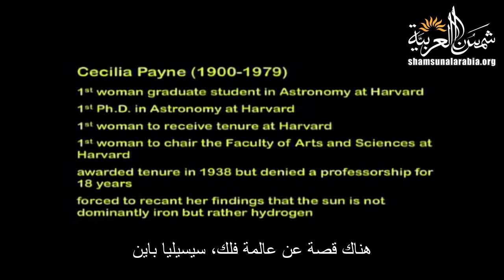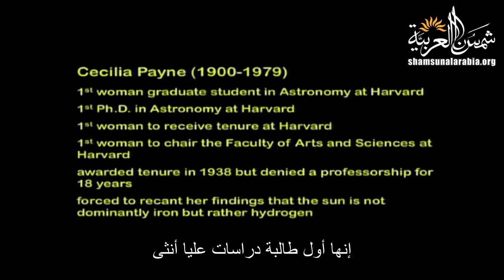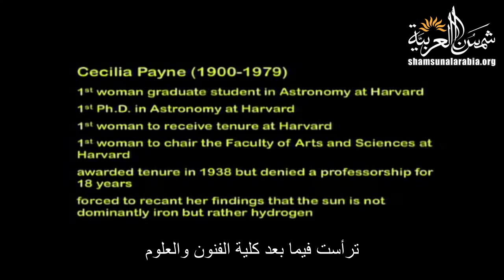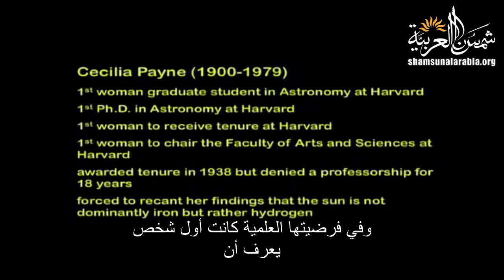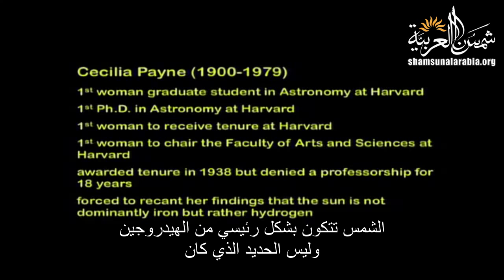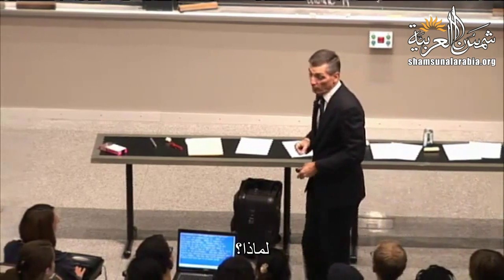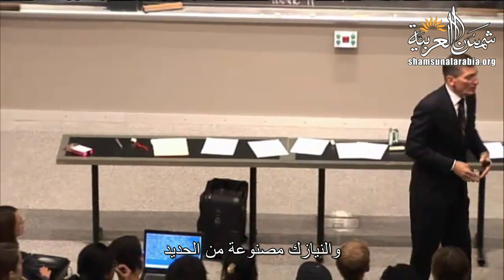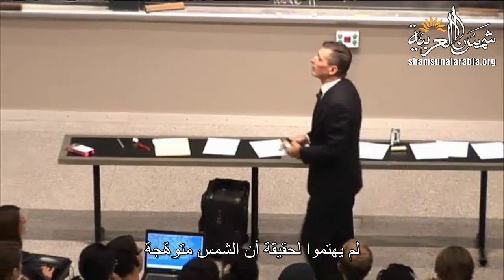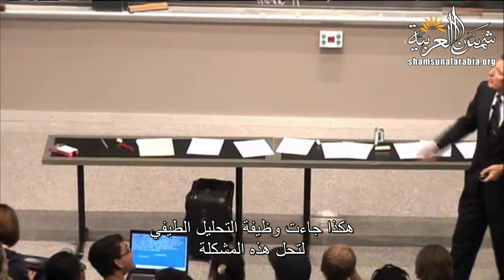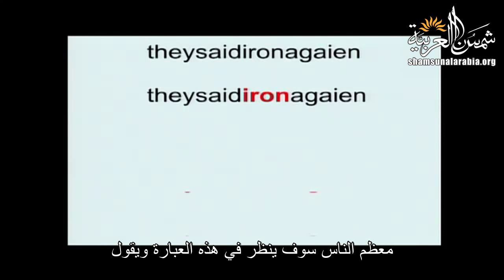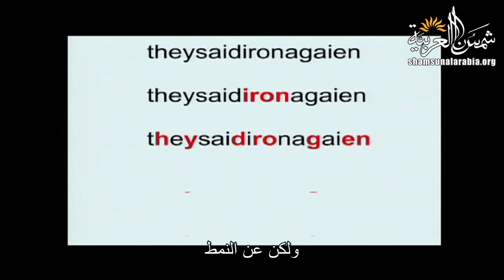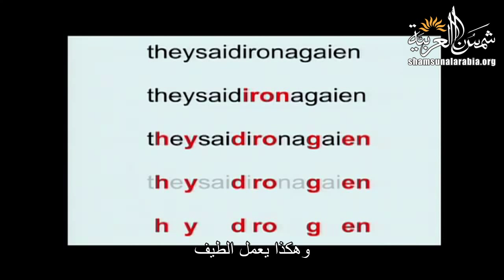Here's the story of astronomer Cecilia Payne, the first woman graduate student in astronomy at Harvard. She went on to chair the Faculty of Arts and Sciences but was denied a professorship for 18 years because she was a woman. In her thesis, she was the first person to figure out that the sun is dominantly hydrogen — not iron, as most astronomers believed. Spectroscopy is about the pattern, not about misreading individual words in the data.